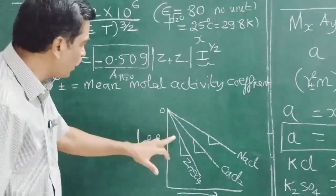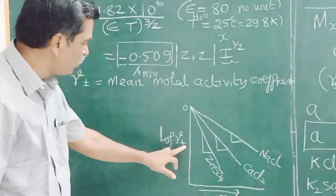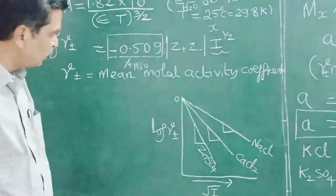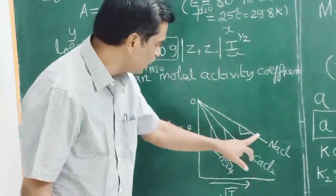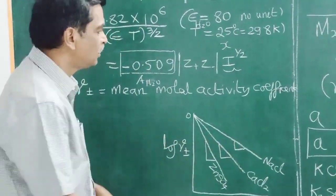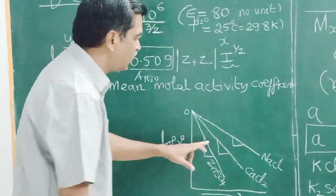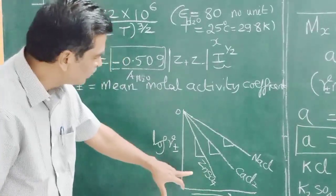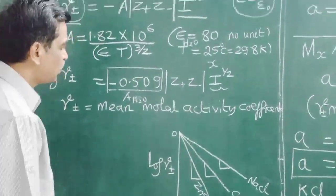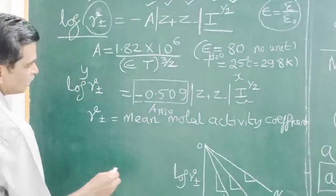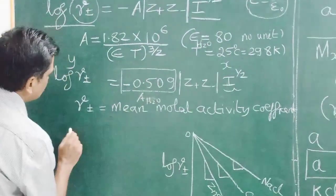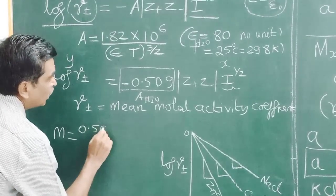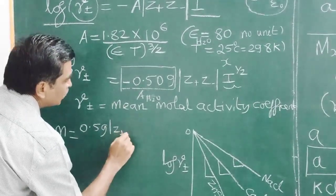If you plot mean activity coefficient versus square root of ionic strength, a curve is obtained with a slight deviation from a straight line. For calcium fluoride, the slope is the largest. Why? Because of the charge product |z₊z₋|.